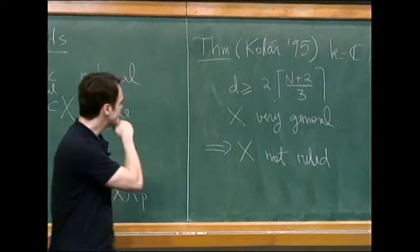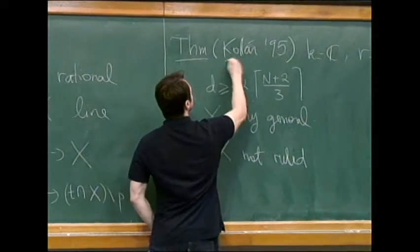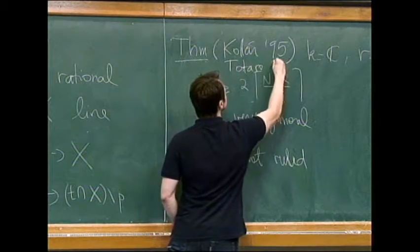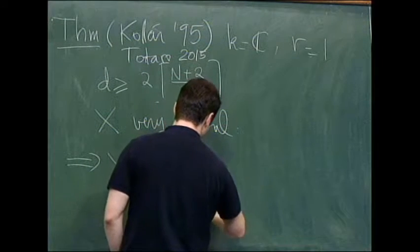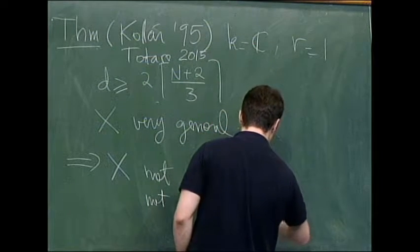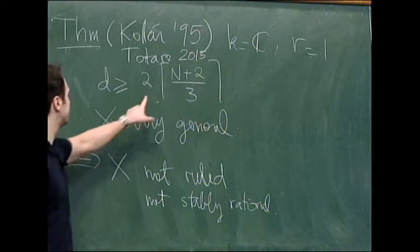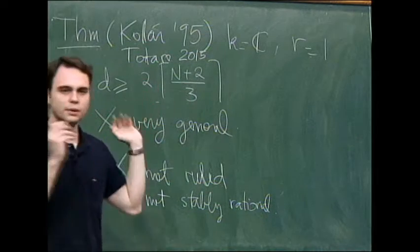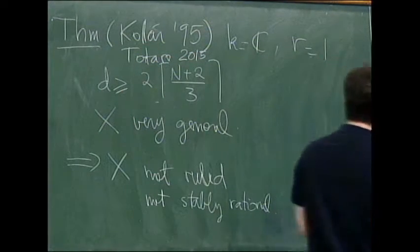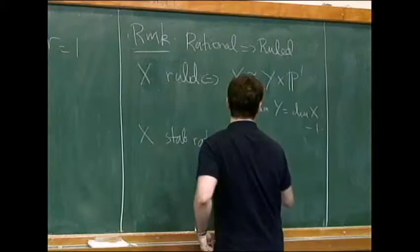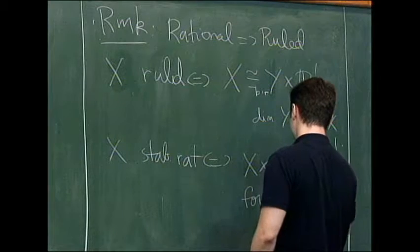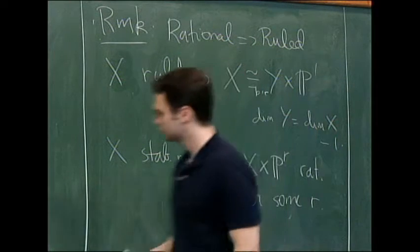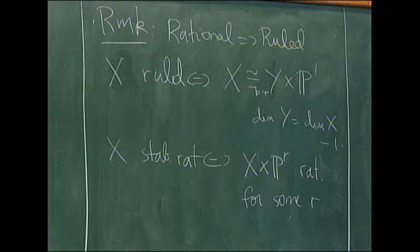Now, this is interesting. So Totaro proved something similar. Totaro in 2015 proved that X is not stably rational under the same hypothesis. Actually, Totaro had a one here, so it had a slightly better result. And stably rational means that X cross PR is rational for some R. So it's another weak version of rational. So this is what Totaro did.